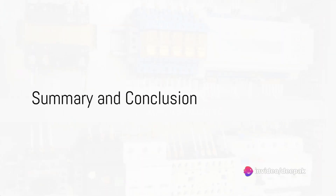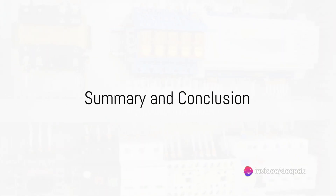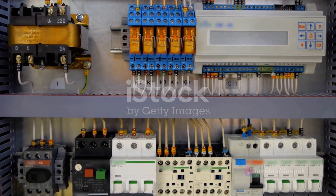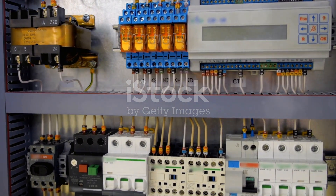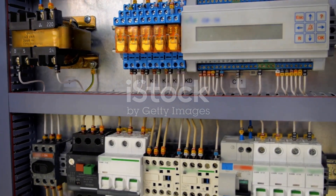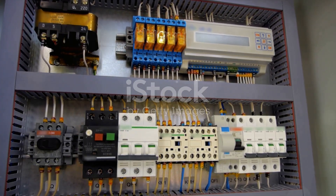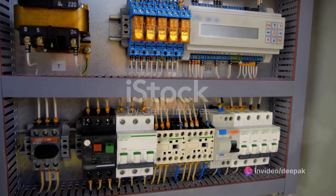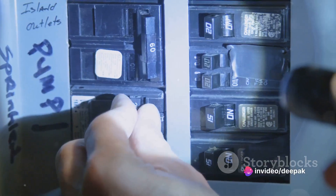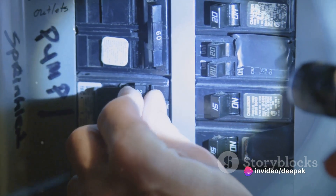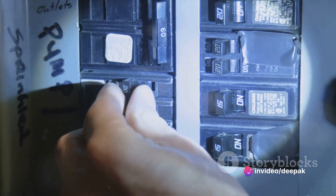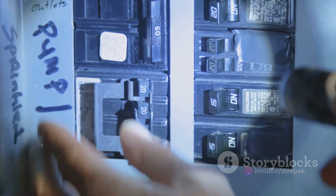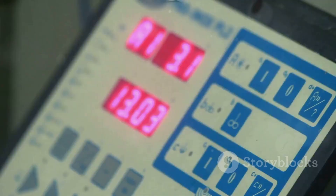In summary, electrical control panels are the brains of a building's electrical system. They come in different types, including the main breaker panel, the main lug panel, and the transfer switches. These panels control the distribution of power, helping to keep your buildings and homes safe from electrical mishaps.